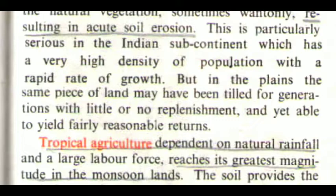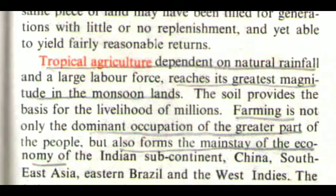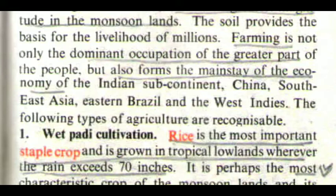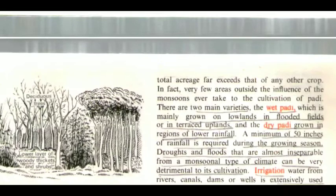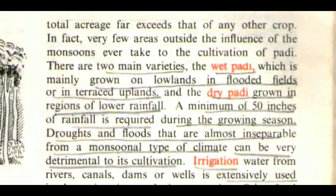Tropical agriculture, dependent on natural rainfall and a large labour force, reaches its greatest magnitude in the monsoon lands. The soil provides the basis for the livelihood of millions. Farming is not only the dominant occupation of the greater part of the people, but also forms the mainstay of the economy of the Indian subcontinent, China, South-East Asia, Eastern Brazil, and Western Asia. The following types of agriculture are recognizable. The first is wet paddy cultivation. Rice is the most important staple crop and is grown in tropical lowlands wherever the rain exceeds 70 inches. It is perhaps the most characteristic crop of the monsoon lands. Very few areas outside the influence of the monsoons ever take to the cultivation of paddy.